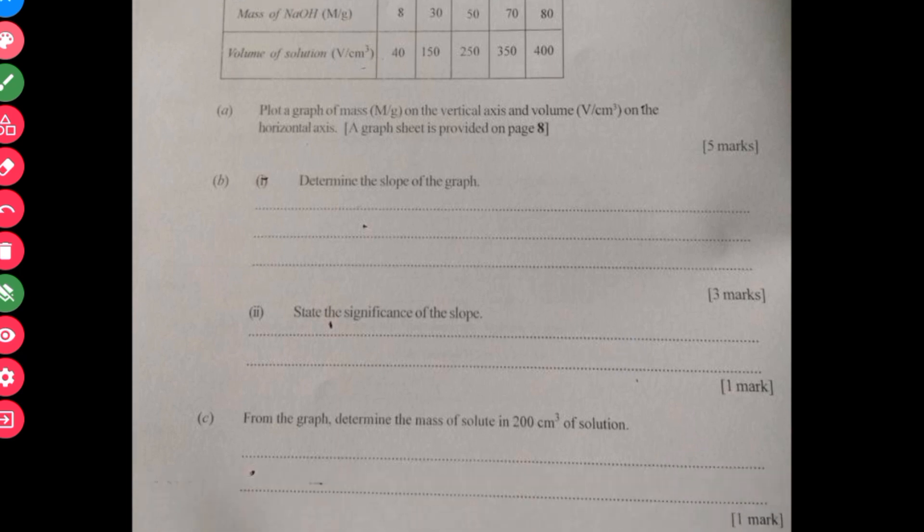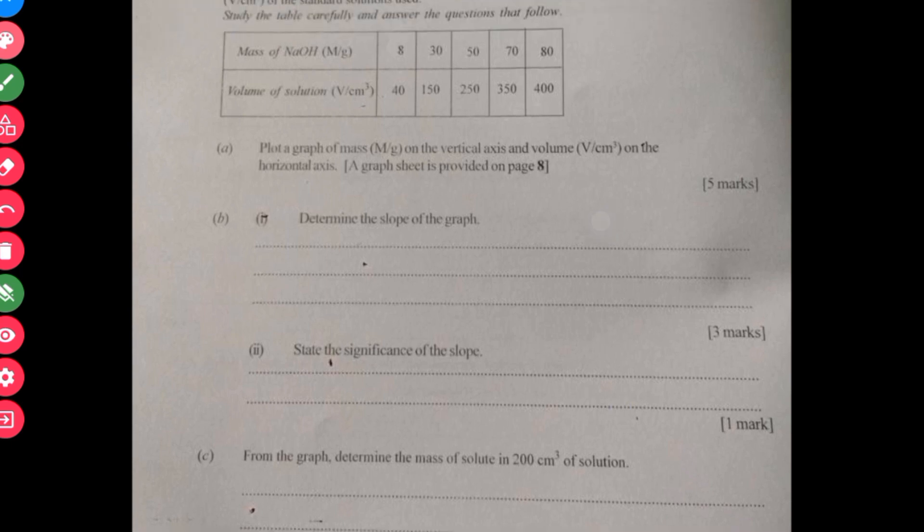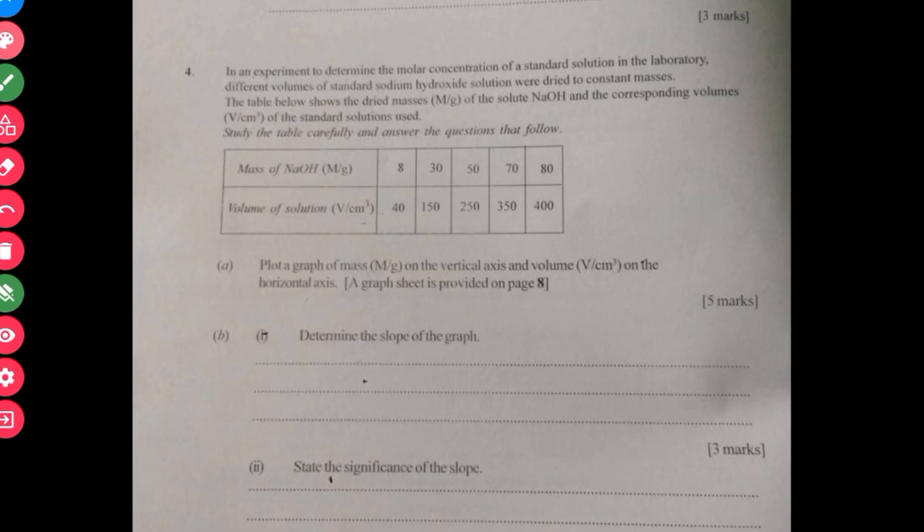You are expected to determine the slope and then determine the significance, state the significance of the slope. And from the graph determine the mass. So this you just have to trace. On the vertical axis, your volume was in centimeter cube and then your mass was in grams. You are just supposed to use the unit. You are not supposed to convert anything. Assuming you were working, that's where you were expected to convert.